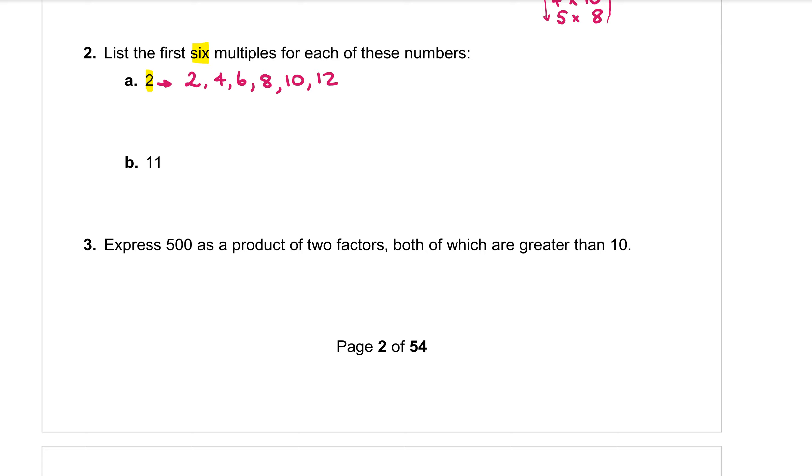Let's do that again for our second number here. We want the first six multiples of 11. So our 11 times tables. 11 times one is 11. 11 times two is 22. 11 times three is 33. 11 times four is 44. 11 times five is 55. And 11 times six is 66. And that's it.